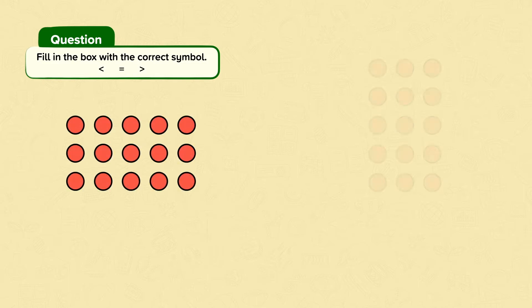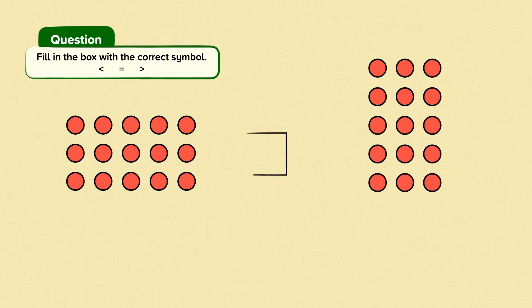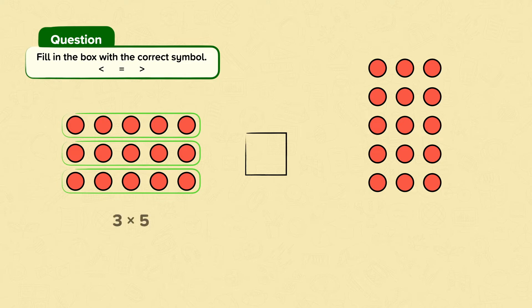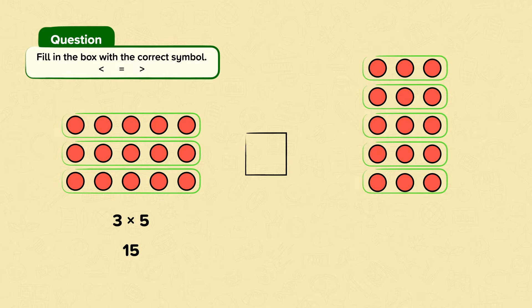Fill in the box with the correct symbol. We need to compare these two number arrays. This group shows three rows of five, or three groups of five. This is the same as three times five, which is fifteen. This group shows five rows of three, or five groups of three. This is the same as five times three, which is fifteen.